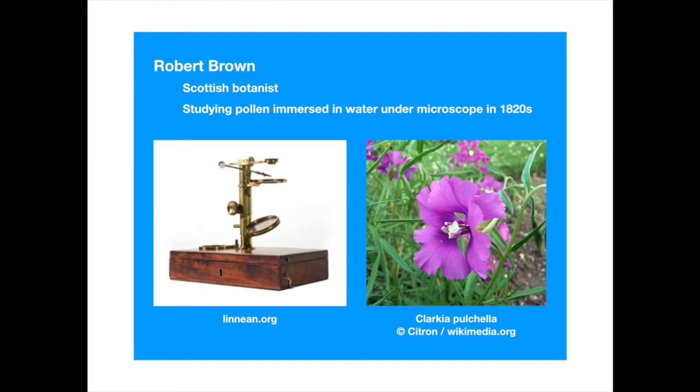The story of Brownian motion started about two centuries ago, when a Scottish botanist, Robert Brown, while examining the grains of pollen suspended in water, observed that these particles were in continuous jittery motion.